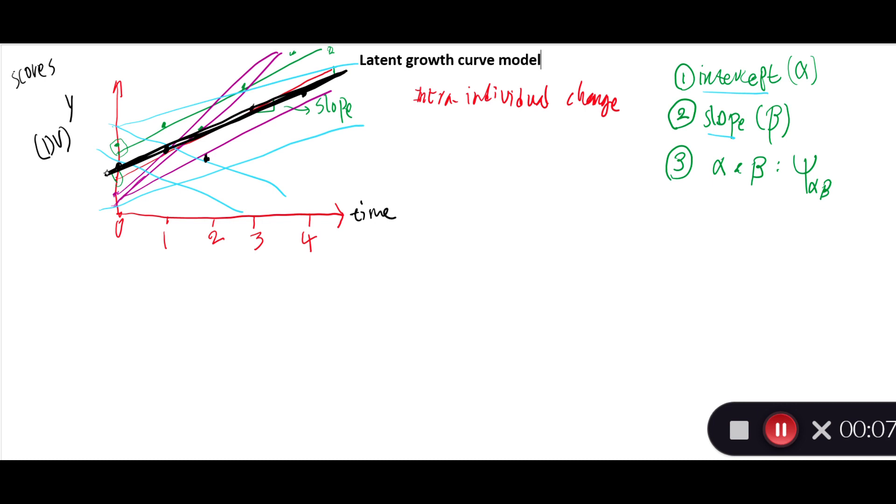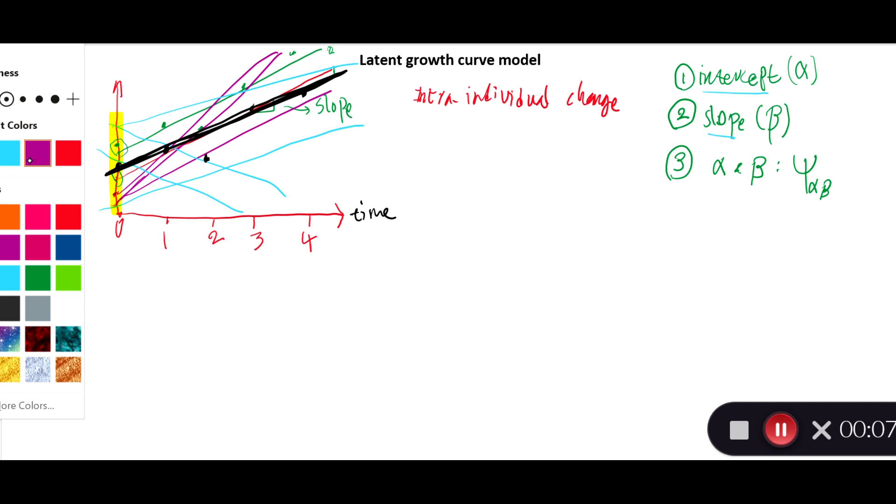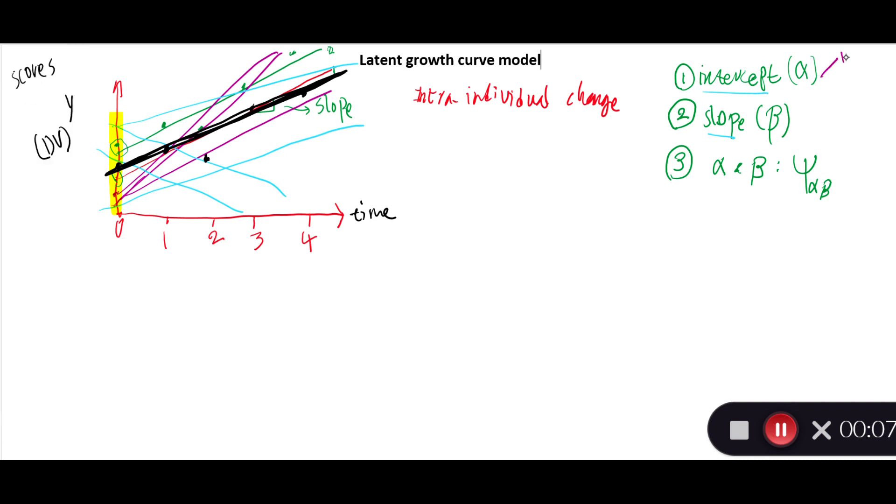One important factor we need to take into account is that, as you see in these intercepts right here, we have variability, which means there is some sort of source of variance. When there is a source of variance, there are two things we need to do: one is what causes that variance, and the other is whether this variance is significant. Actually, we should start from the latter. If the variance is significant, then we need to figure out what causes the significant variance in these intercepts. So the first parameter we need to look at is the intercept, specifically its variance. In addition, we have a mean score or mean for all the intercepts.